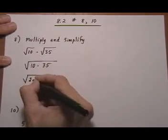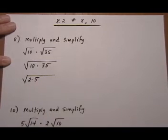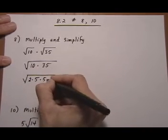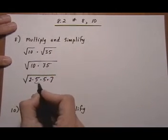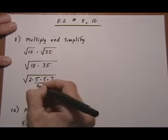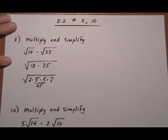We have 10, which is 2 times 5, and 35, which is 5 times 7. And then, what I notice is that I have a 5 times a 5 here. I'm going to rewrite this as 25, which is a perfect square. So, I'm going to be able to take the square root of it.